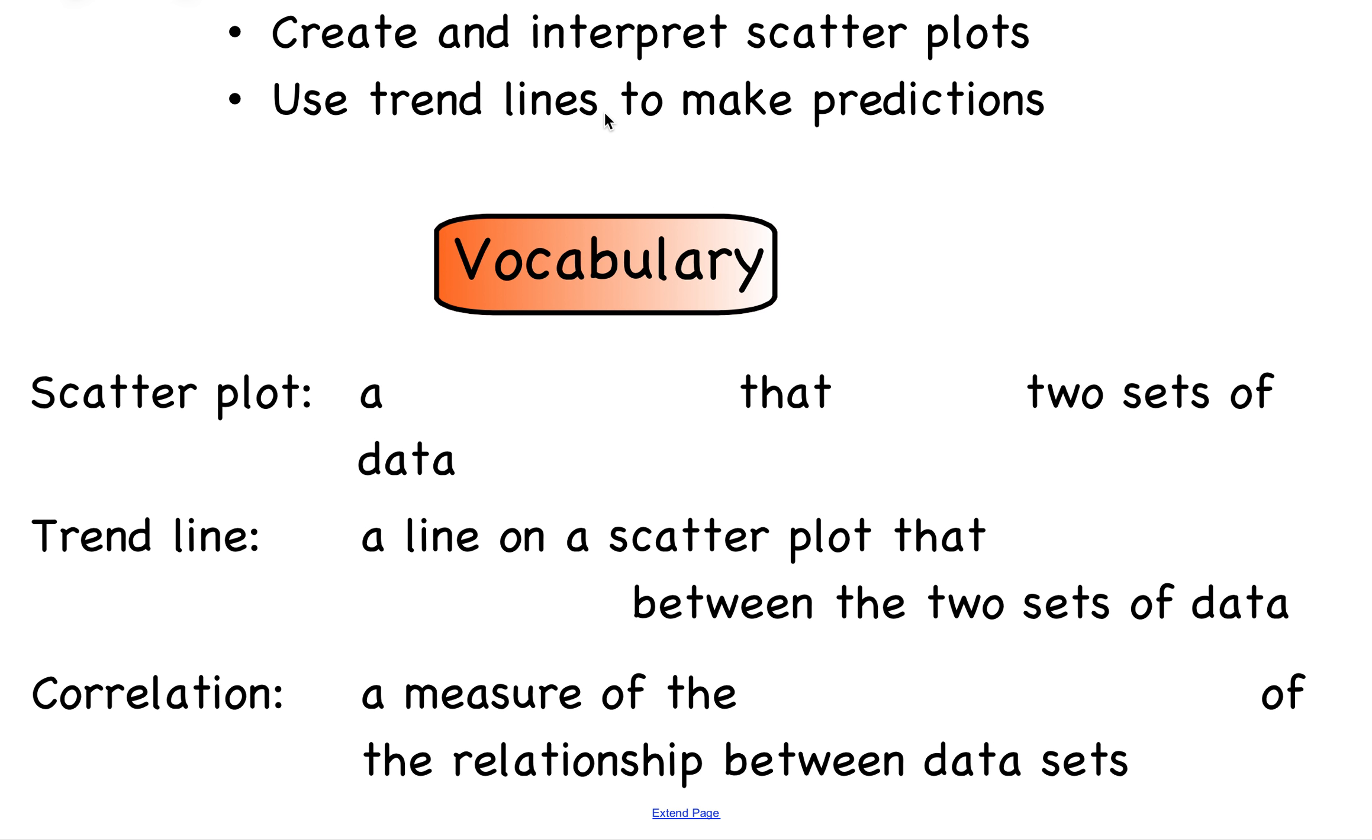So first of all we have some vocabulary that we need to discuss. A scatter plot is just a discrete graph and it relates two sets of data. A trend line is a line on a scatter plot and it shows the relationship between those two sets of data. A correlation is a measure of the strength and the direction of the relationship between the two data sets.